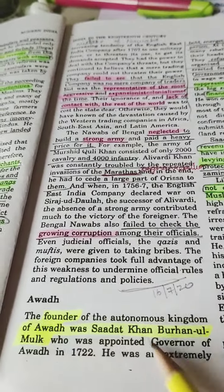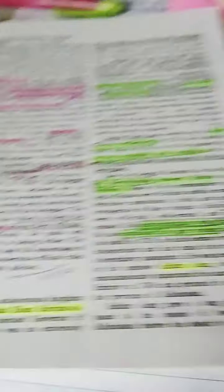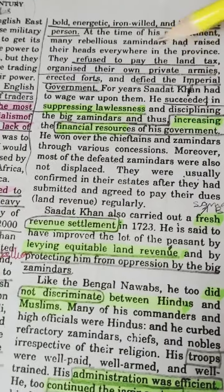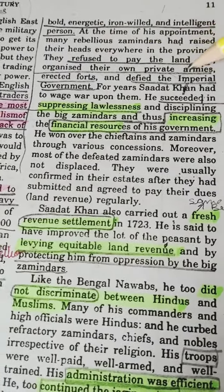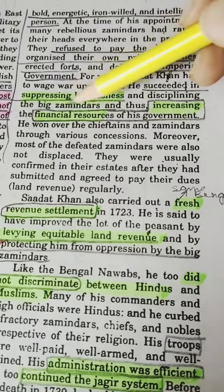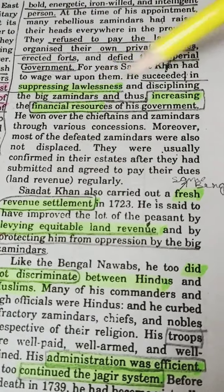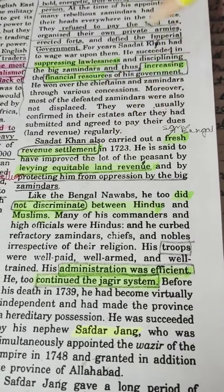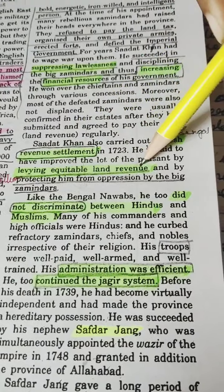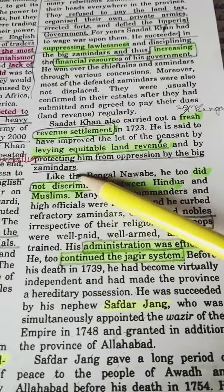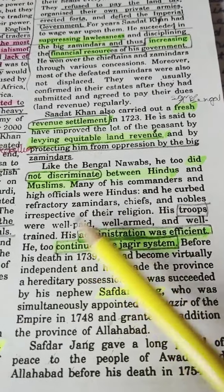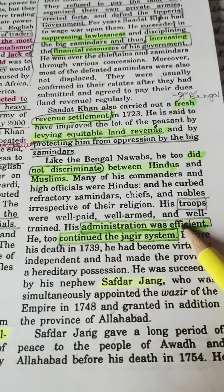The founder of Awadh was Sadat Khan Burhan ul-Mulk, appointed governor of Awadh in 1722. He was extremely bold, energetic, iron-willed, and intelligent. He refused to pay land tax, organized his own private armies, defied the imperial government, suppressed lawlessness, and increased the financial resources of his government. He carried out a fresh revenue settlement, levied equitable land revenue, protected peasants from oppression, did not discriminate between Hindus and Muslims, and kept troops well-paid, well-armed, and well-trained. He continued the Jagir system.